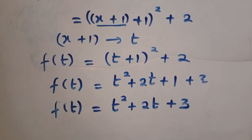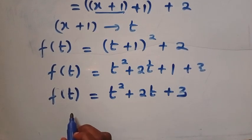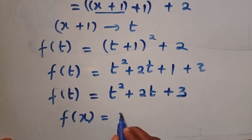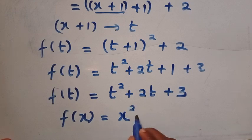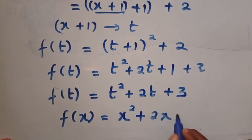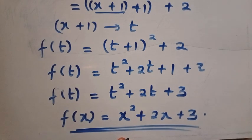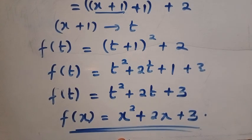And by changing this, because x and t are both members of a real number, we then have f of x equals x squared plus 2x plus 3. So this is what we get for f of x only, from f of x plus 1.